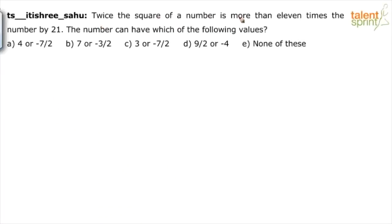So it says twice the square of a number is more than 11 times the number by 21. The number can have which of the following values. Let us assume the number is N. So it says twice the square of number. What is square of number? N square. Twice the square of number? 2N square.